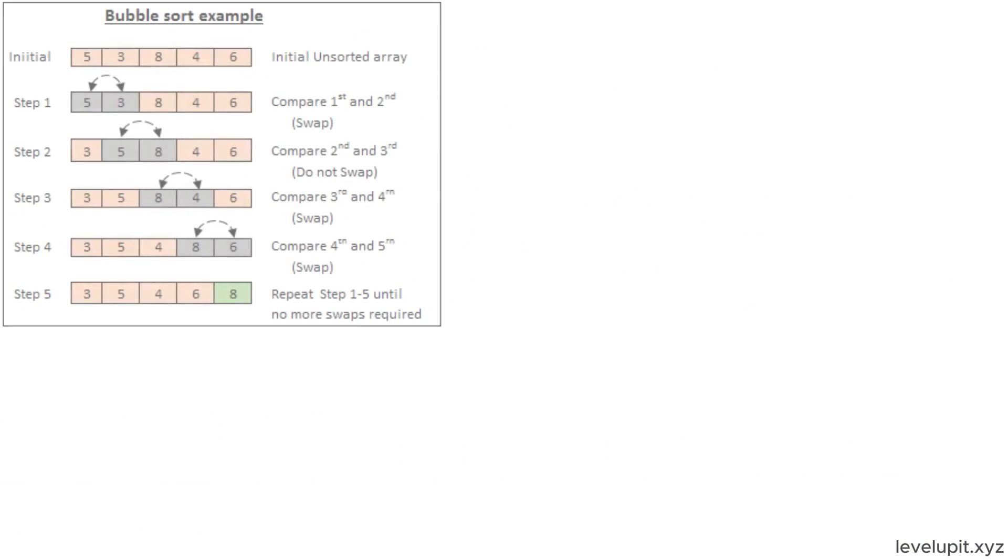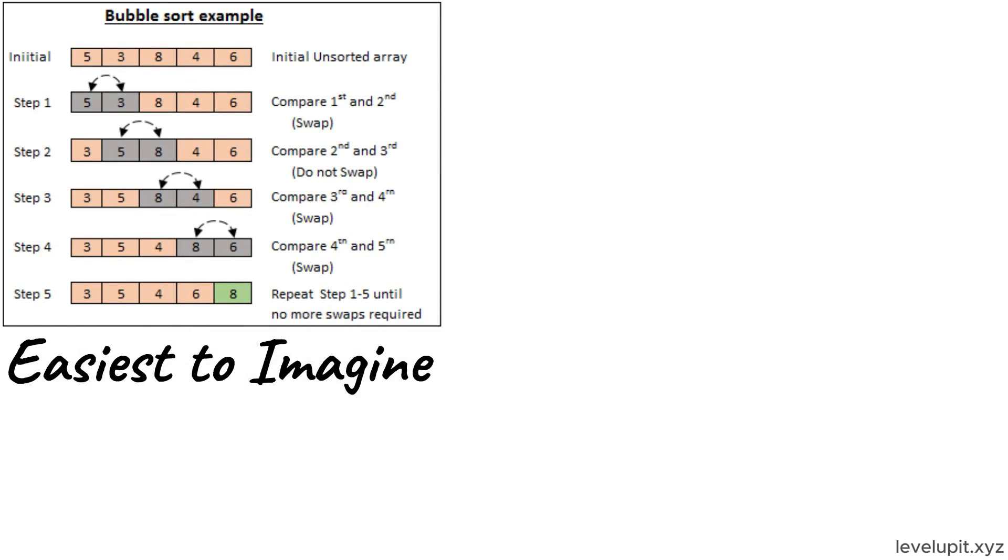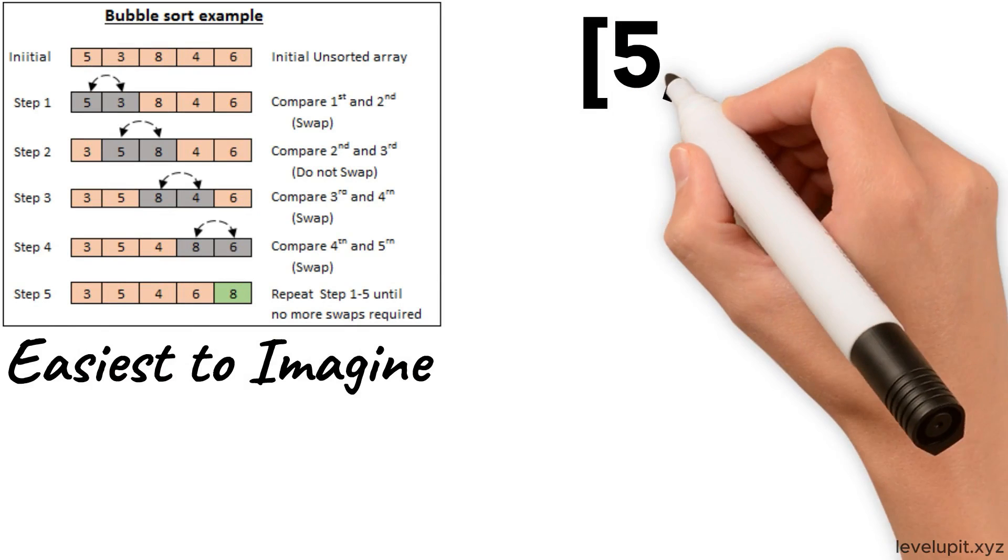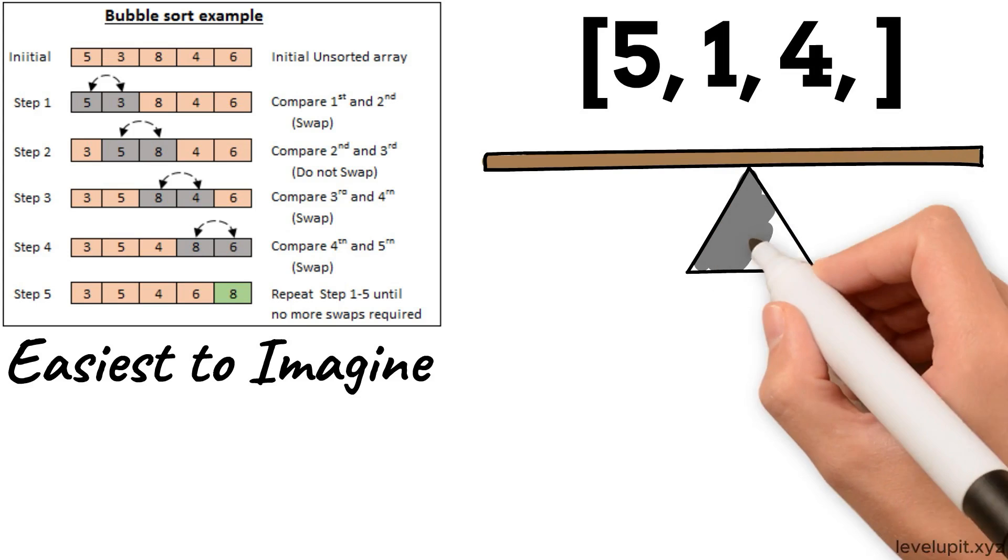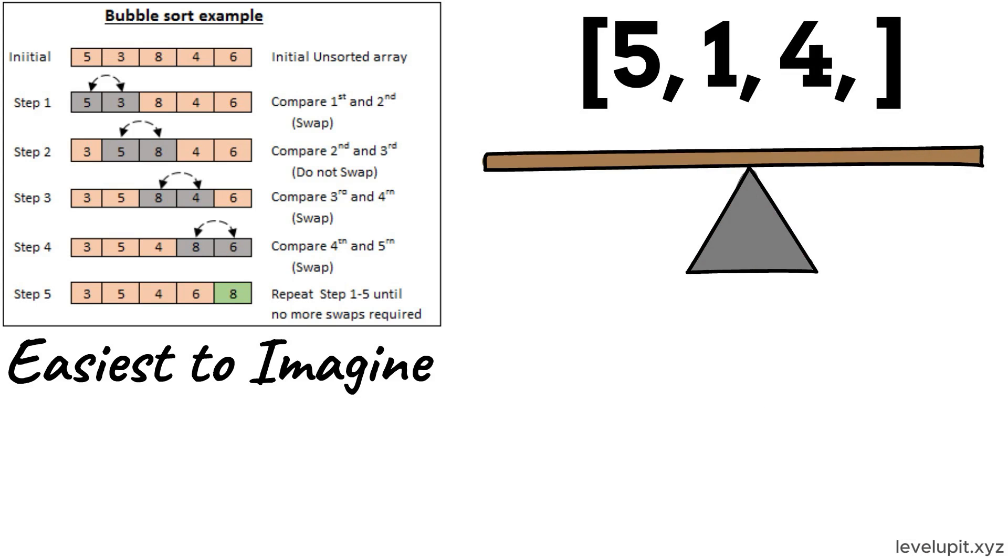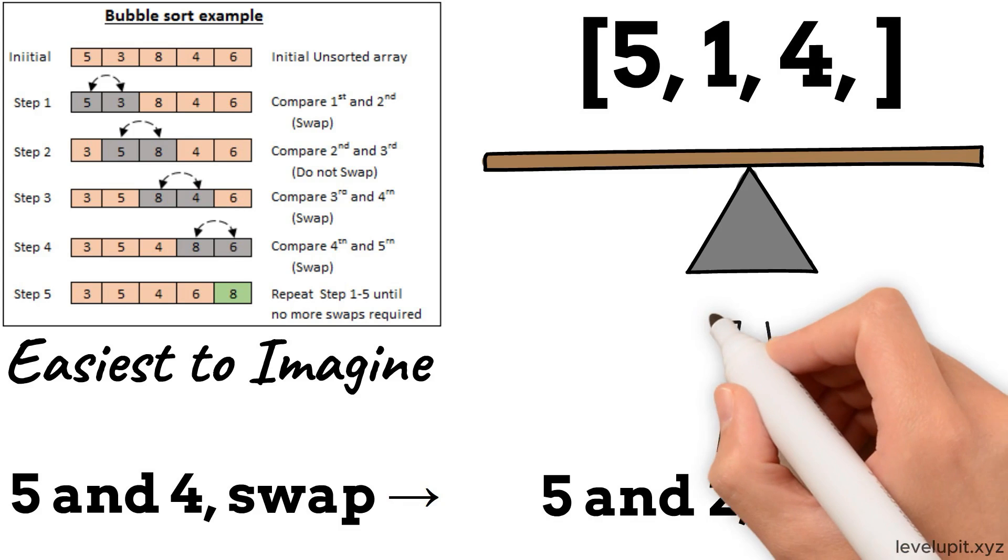Let us start with bubble sort because it is the easiest to imagine. Picture the list 5, 1, 4, 2. We compare neighbors. 5 and 1 are in the wrong order, so swap. Next, compare 5 and 4, swap. Then 5 and 2, swap. The largest bubbled to the end.